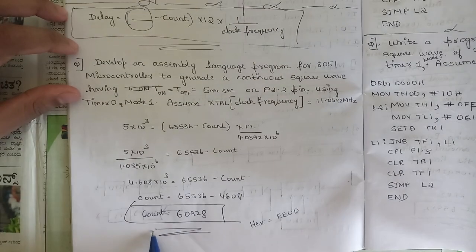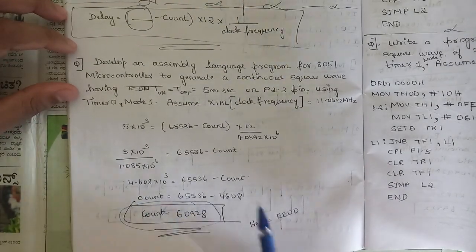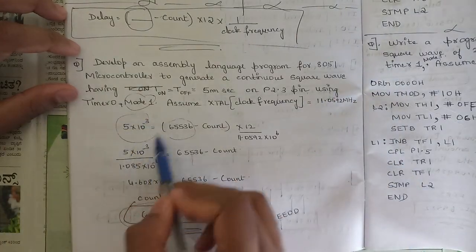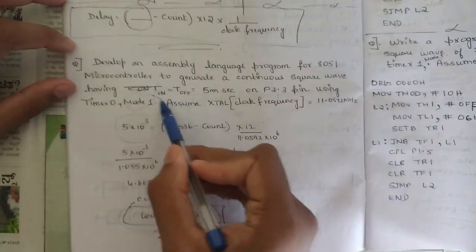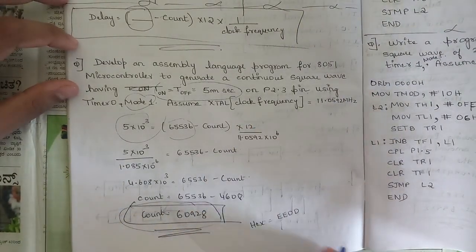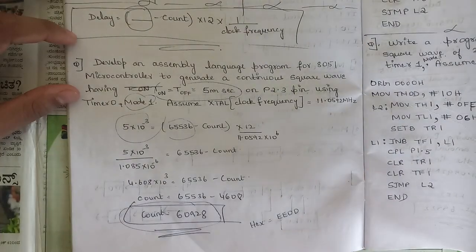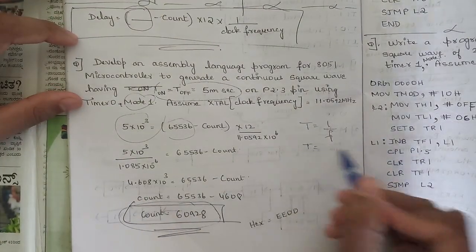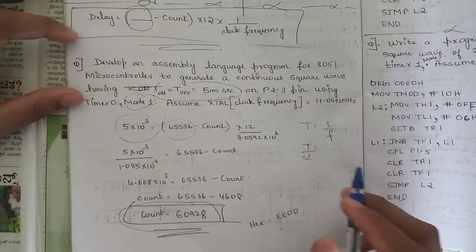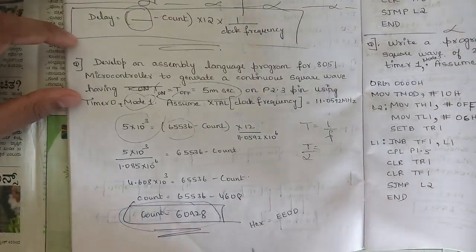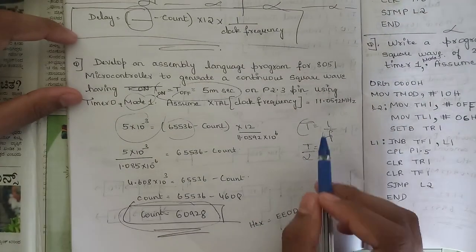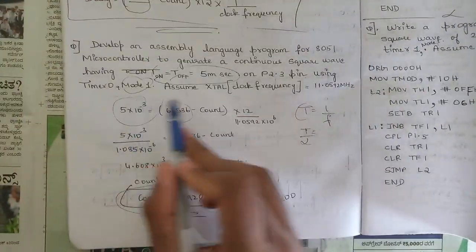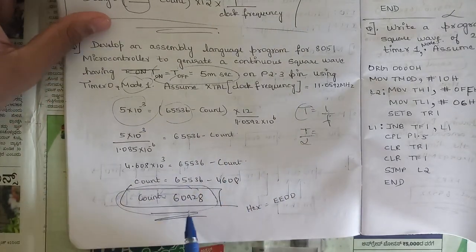First we calculate the count value. Whatever mode is used, we substitute the clock frequency and delay mentioned in the question. The delay T_on equals T_off — for example 5 milliseconds. If frequency is given instead, use T = 1/F, then divide T by 2 because delay covers both on time and off time. Otherwise, if delay is directly given, substitute it, find count, then convert to hexadecimal.